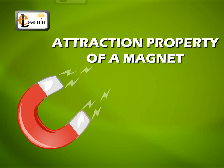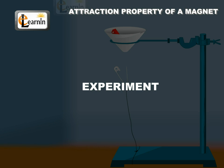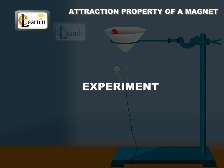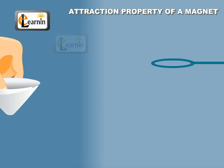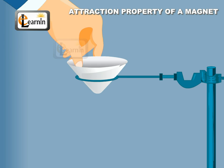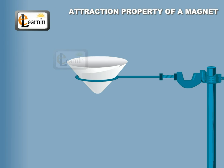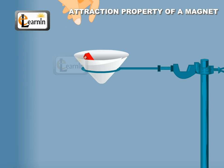Attraction Property of Magnets. The following activity demonstrates the power of a magnet to attract iron pieces. A paper cup is taken and is clamped to a stand, and a magnet is placed inside this paper cup.